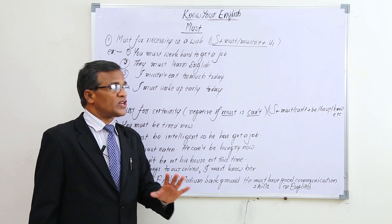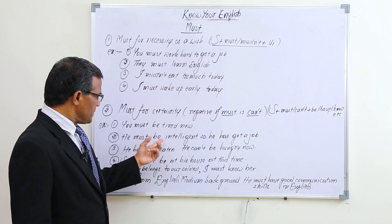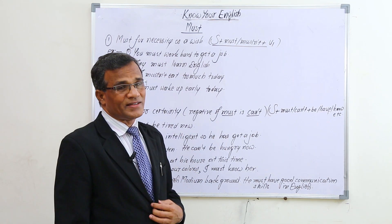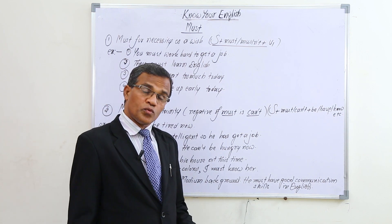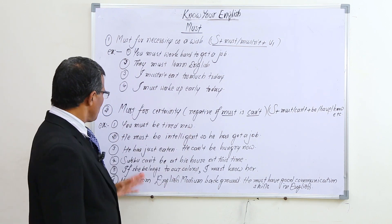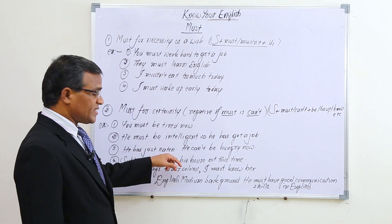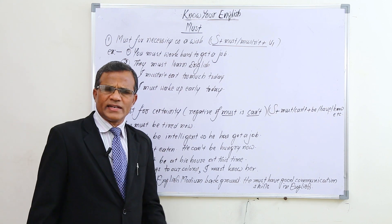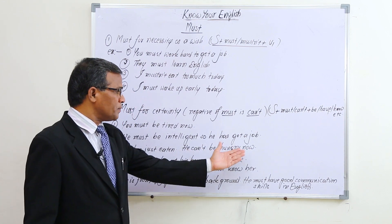'He must be intelligent' — because he has got a job, it is certain that he is intelligent. When we feel certain that something is possible, we use 'must.' For the negative: 'He has just eaten, he can't be hungry now' — there is no chance for him to be hungry again.